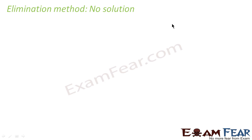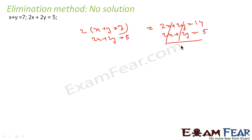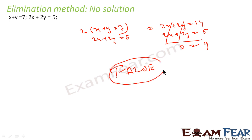Now let's take an example with no solution. Consider x plus y equals 7 and 2x plus 2y equals 5. Multiply the first by 2: we get 2x plus 2y equals 14. Subtracting: 0 equals 14 minus 5, which is 0 equals 9 — a false statement. Since it is a false statement, there is no solution for this system.